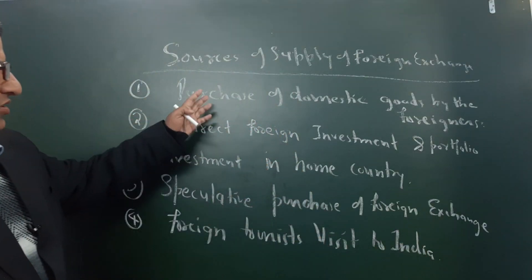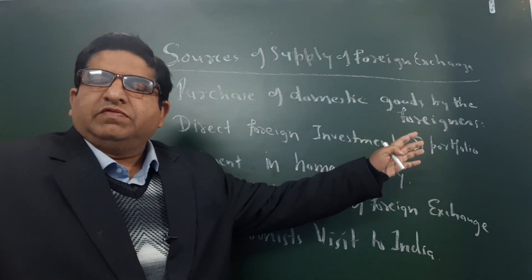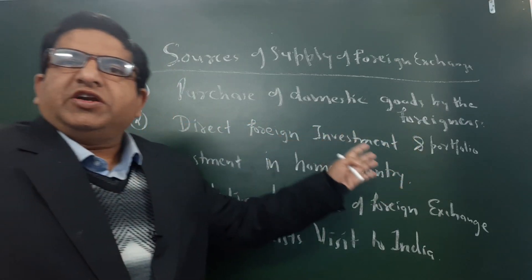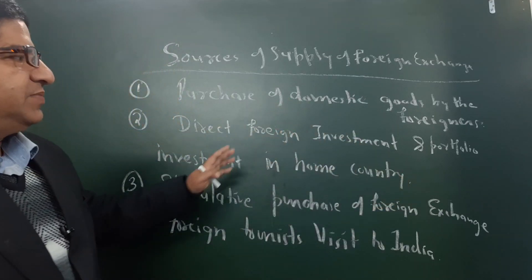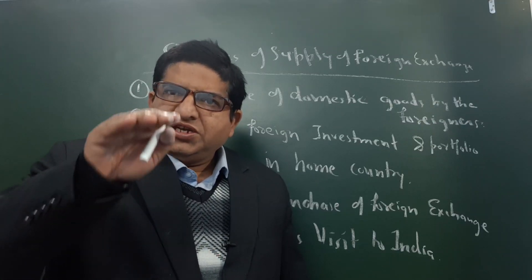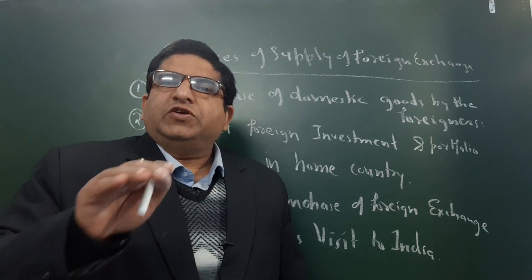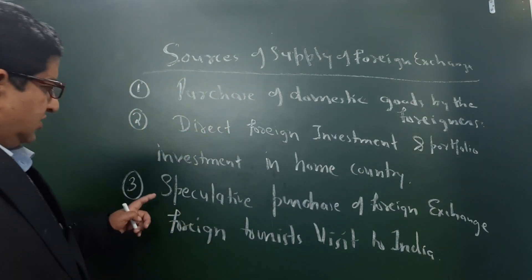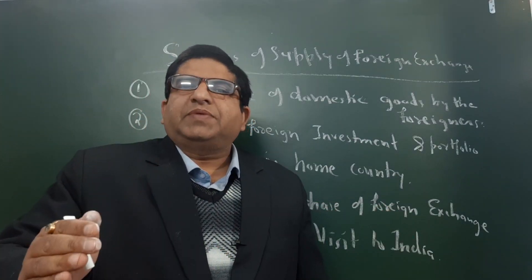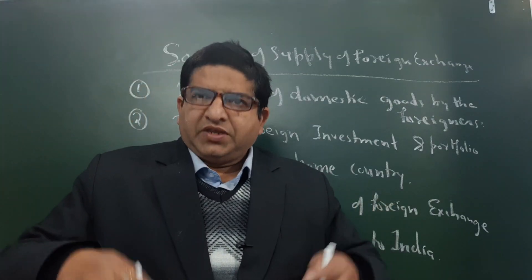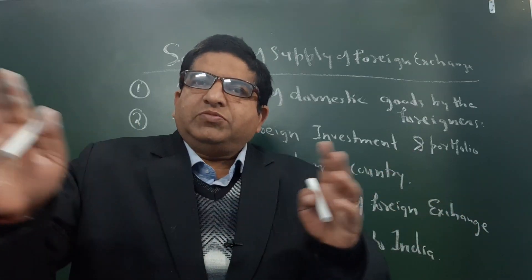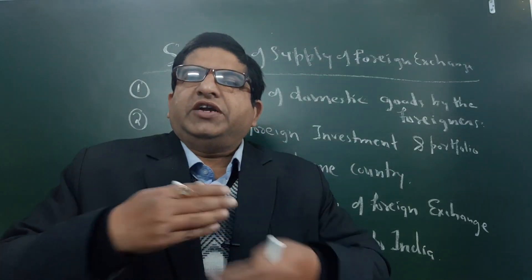Let me explain these four points again. First, purchase of domestic goods by foreigners — when foreigners purchase domestic goods, supply of foreign currency will increase. Second, direct foreign investment and portfolio investment in the home country — investing in shares and bonds in the domestic country will definitely increase supply. Third, speculative purchase of foreign exchange increases supply. Fourth, foreign tourist visit to India — tourists from USA bring dollars, from China bring yuan, so foreign currency supply definitely increases.